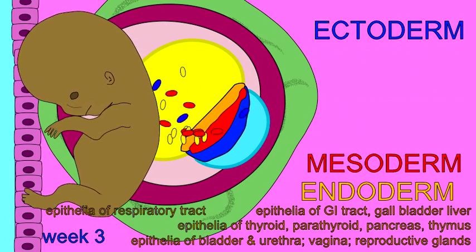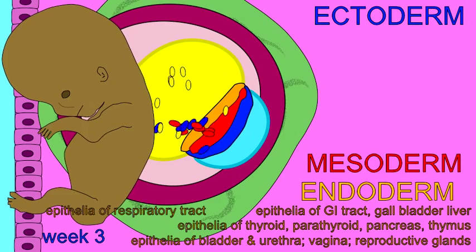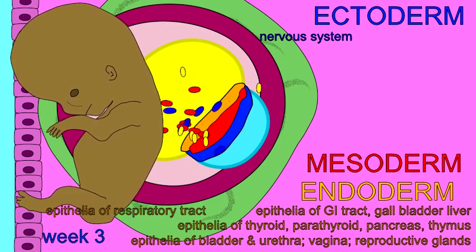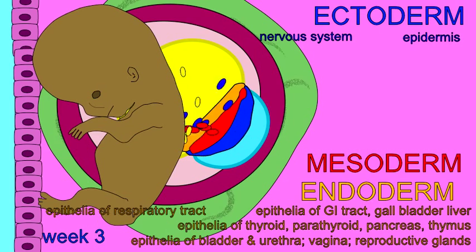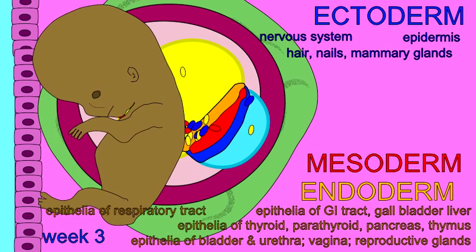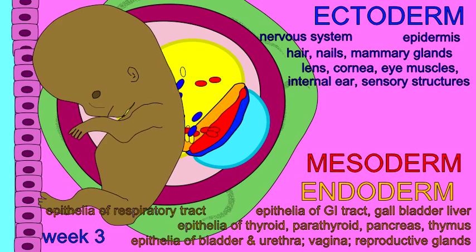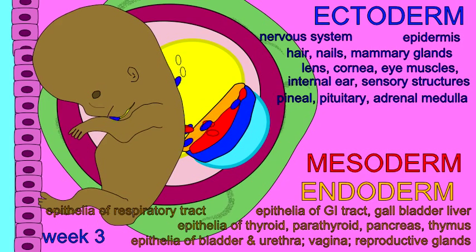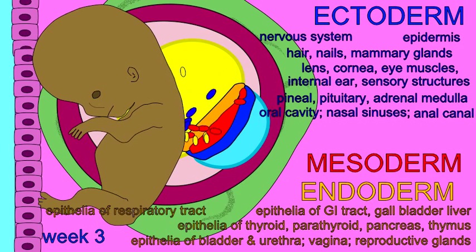From the tissue known as ectoderm will develop the entire nervous system, the epidermis of the skin, hair follicles, the lens and cornea, the internal and external ear, the pineal gland, and the epithelium of the aural cavity, and other structures.